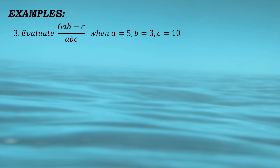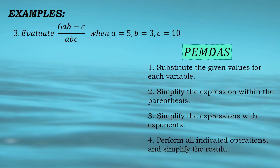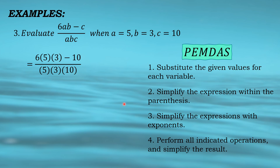Another example: evaluate (6ab minus c) over abc when a equals 5, b equals 3, and c equals 10. Again, let us apply PEMDAS and follow the steps. First, substitute the given values for the variables a, b, and c into our expression — it becomes 6 times 5 times 3 minus 10, over 5 times 3 times 10. We don't use the x symbol for multiplication; we can use a dot or open and close parentheses. Second step, simplify the expression within the parenthesis: each parenthesis has only one number, so we proceed to the third step.